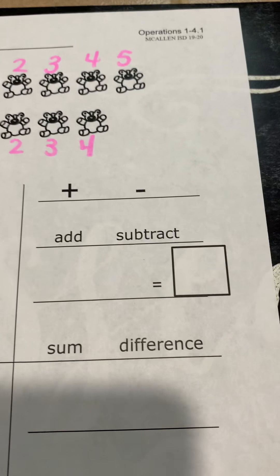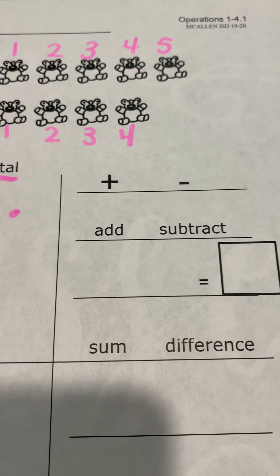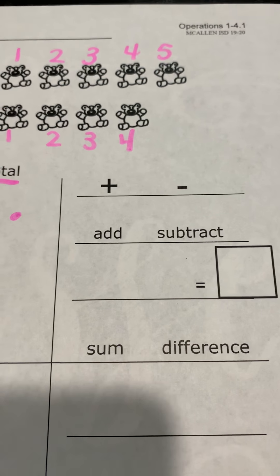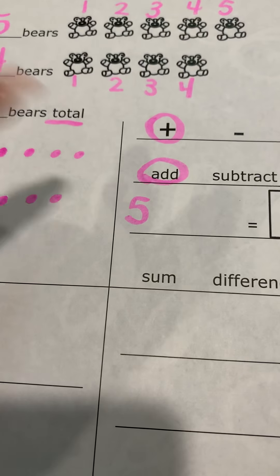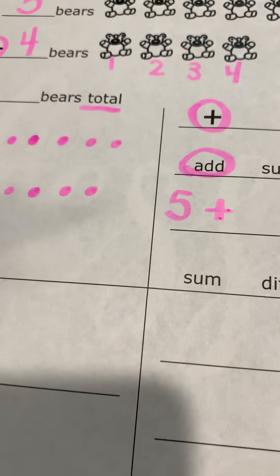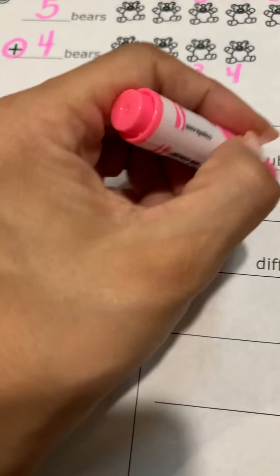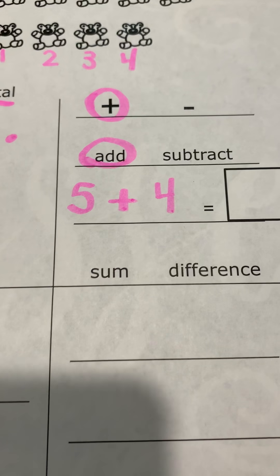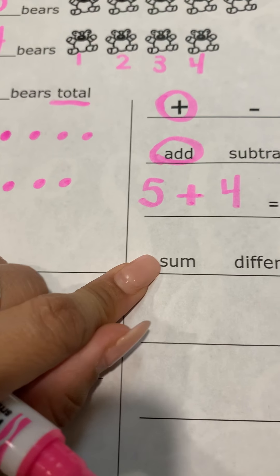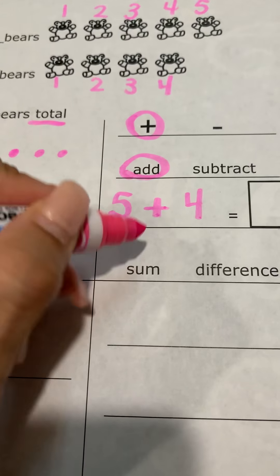Once we analyze, we go to formulate our plan. We circle our operation — are we going to use the plus sign or the minus sign? We are going to use the plus sign, because we are adding. The method is add. We make our number sentence: our first addend is five, plus our second addend four. We leave the solution box blank. And the process: we are looking for the sum.